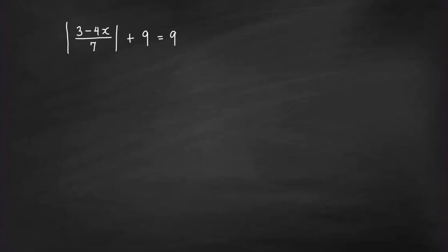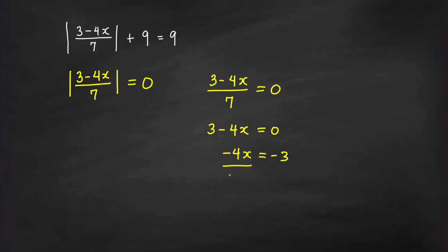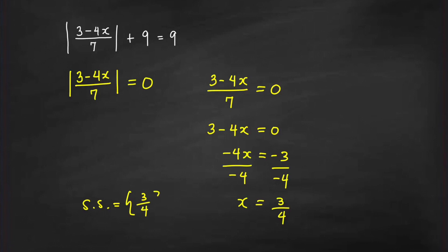Next, consider the equation with absolute value. Subtracting 9 from both sides gives |(3 − 4x)/7| = 0. The only number whose absolute value equals 0 is 0 itself, so the expression inside must equal 0. Multiplying both sides by 7 gives 3 − 4x = 0, so −4x = −3, and dividing by −4 gives x = 3/4. The solution set is {3/4}.